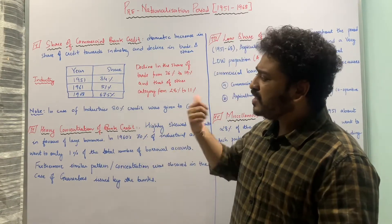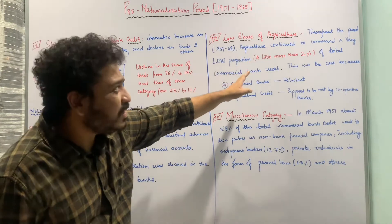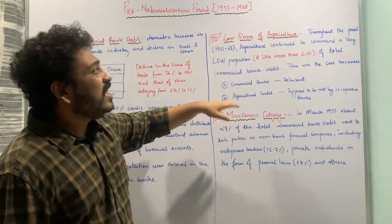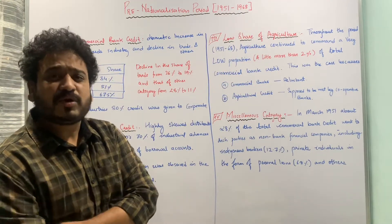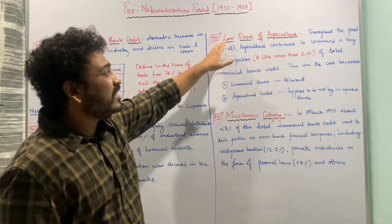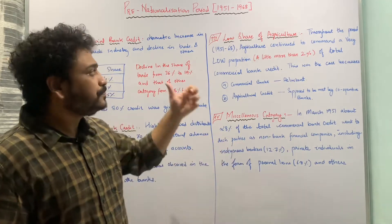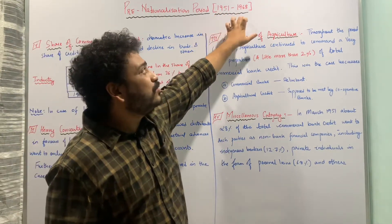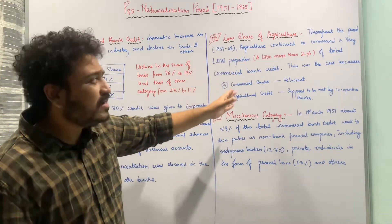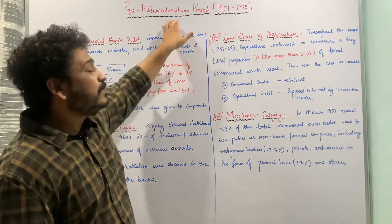Looking from another perspective — agriculture — there was a very low share of agricultural credit throughout the period from 1951 to 1968. Agriculture continued to command a little more than 2% of the total commercial bank credit. So only 2% of all loans disseminated by commercial banks during this period went to agriculture.